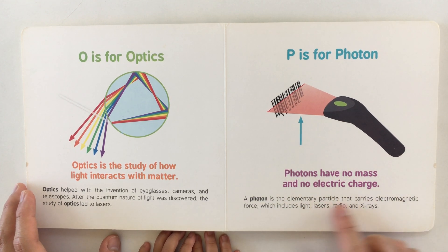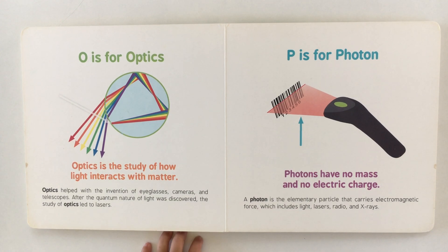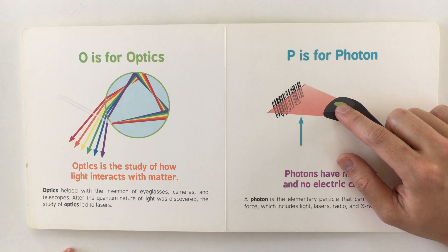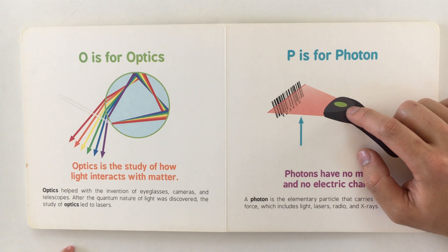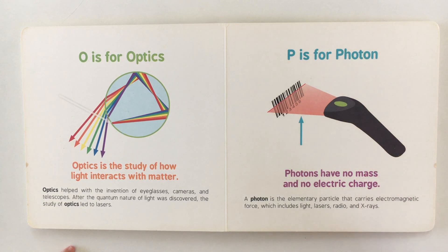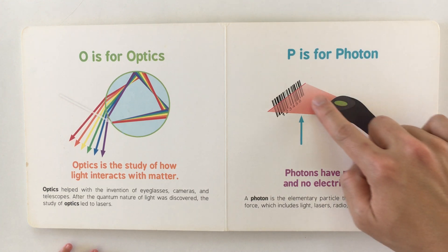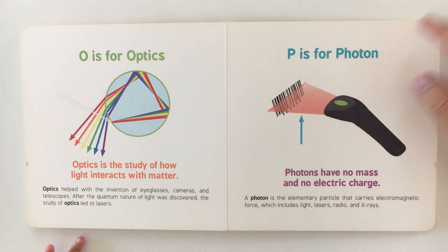P is for photon. Photons have no mass and no electric charge. A photon is an elementary particle that carries electromagnetic force, which includes light, lasers, radio, and x-rays. You remember when we went shopping and the lady at the checkout was going beep beep? That's this — it's a little light and there's a barcode.